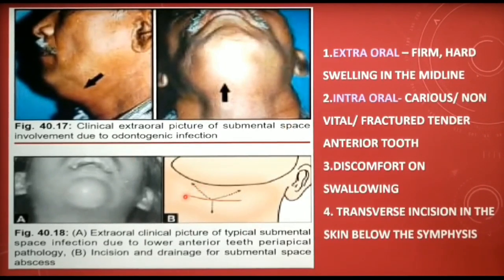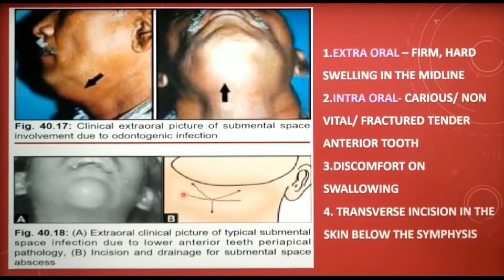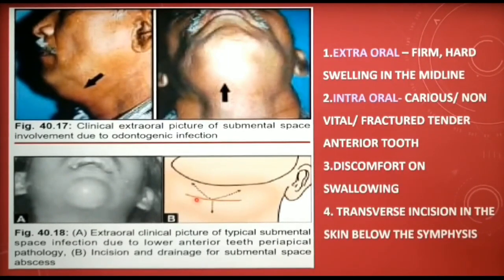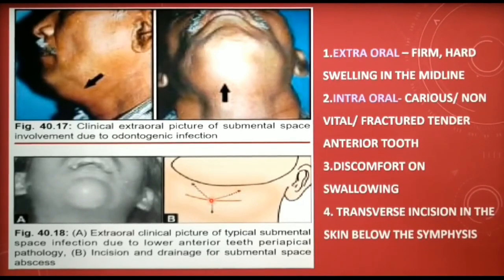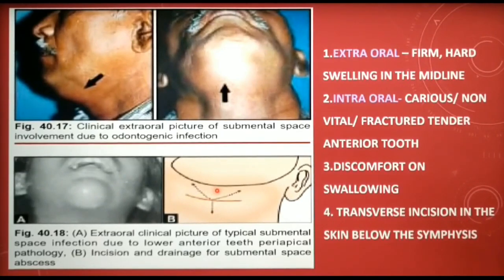Drainage of a submental space infection is performed by making a transverse incision in the skin just below the symphysis of the mandible. A blunt dissection is carried out by inserting a sinus forceps through this incision in an upward and backward direction. A small piece of corrugated rubber drain is then inserted into the abscess cavity and secured to one of the wound margins using a suture.